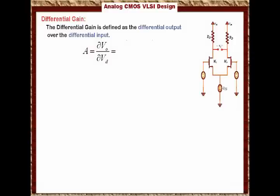But we know that the output voltage is Vout2 minus Vout1, then we can say that the differential gain is defined as ∂(Vout2 minus Vout1) over the differential input, which is ∂(Vn2 minus Vn1).